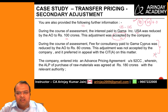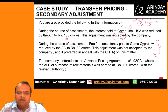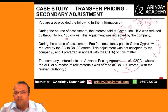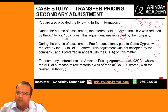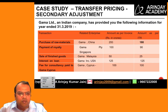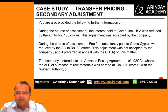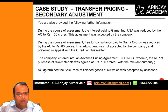The company entered into an Advanced Pricing Agreement under Section 92CC wherein the arm's length price of the purchase of raw material was agreed at 180 crores. Since the APA price of 180 crores matches the price already offered in the ITR, no further adjustment is required on this account — the adjustment has already been accounted for.